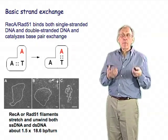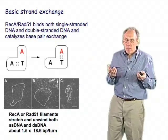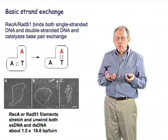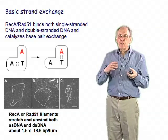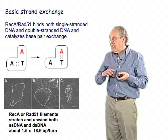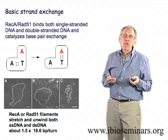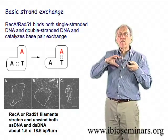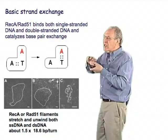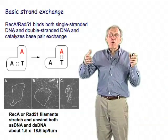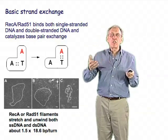It also stretches double-stranded DNA. You probably remember that B-form DNA has 10.4 base pairs per helical turn. When double-stranded DNA is bound inside the RecA filament, it has been underwound and extended so that there are now 18.6 base pairs per turn — almost a 50% increase in the length of the molecule.